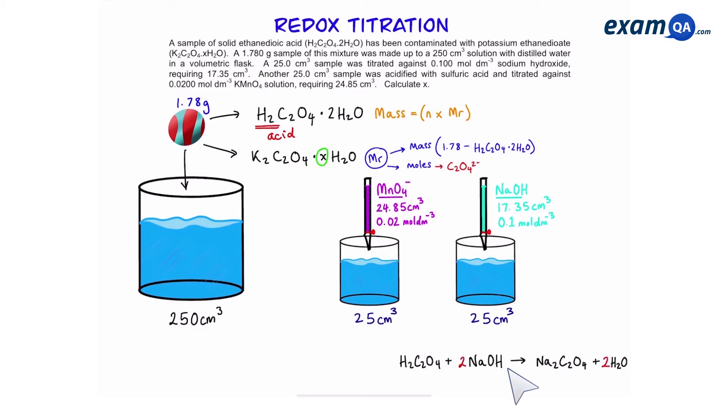So this is what the balanced equation should look like. As we can see the molar ratio of ethane dioic acid and sodium hydroxide is 1 to 2 because remember it's a diprotic acid similar to sulfuric acid. So we'll start off by working out the moles of sodium hydroxide by doing 17.3 times 0.1 over 1000. Once we have the moles of sodium hydroxide we're going to then divide it by 2 to work out the moles of ethane dioic acid.